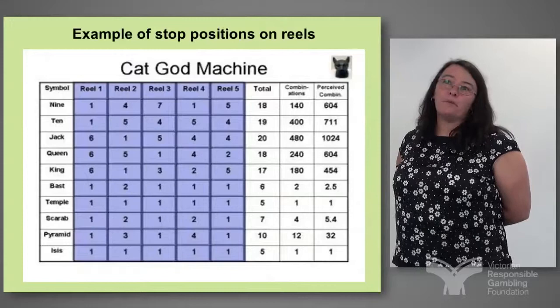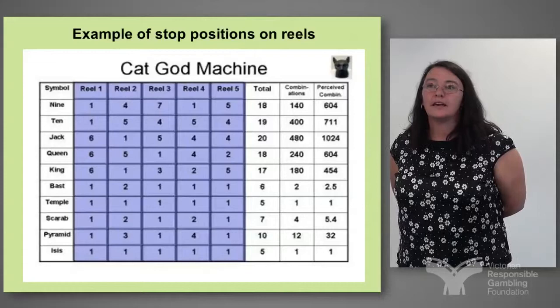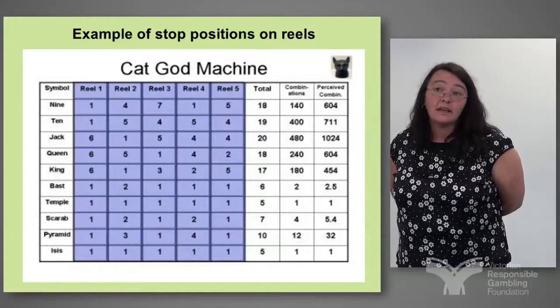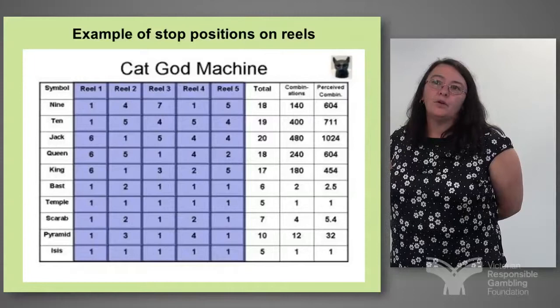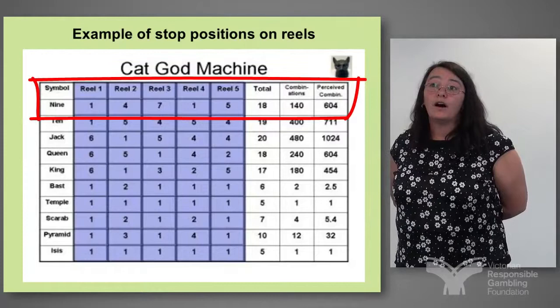Another area not commonly understood by patrons is the reel stop positions, and this is what gives the house its advantage. They would assume that each reel has the same number of symbols, but they don't. In this example it's a very basic game with only 25 symbols. Looking at the top line where the 9's are: on reel 1 there's 1 symbol, on reel 2 there's 2, on reel 3 there's 7, on reel 4 there's 1 and on reel 5 there's 5, giving a total of 18.